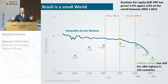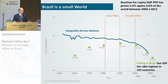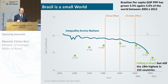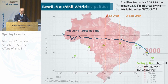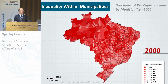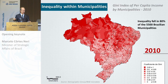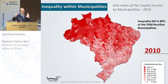Brazilian inequality is still very high in spite of this fall — it's number 18 in 155 countries, so still a bad picture in terms of inequality. Looking at the Brazilian data, this is inequality within municipalities in 2000 versus 2010 using the Gini coefficient. Basically, inequality fell in 80% of municipalities in Brazil during this decade.